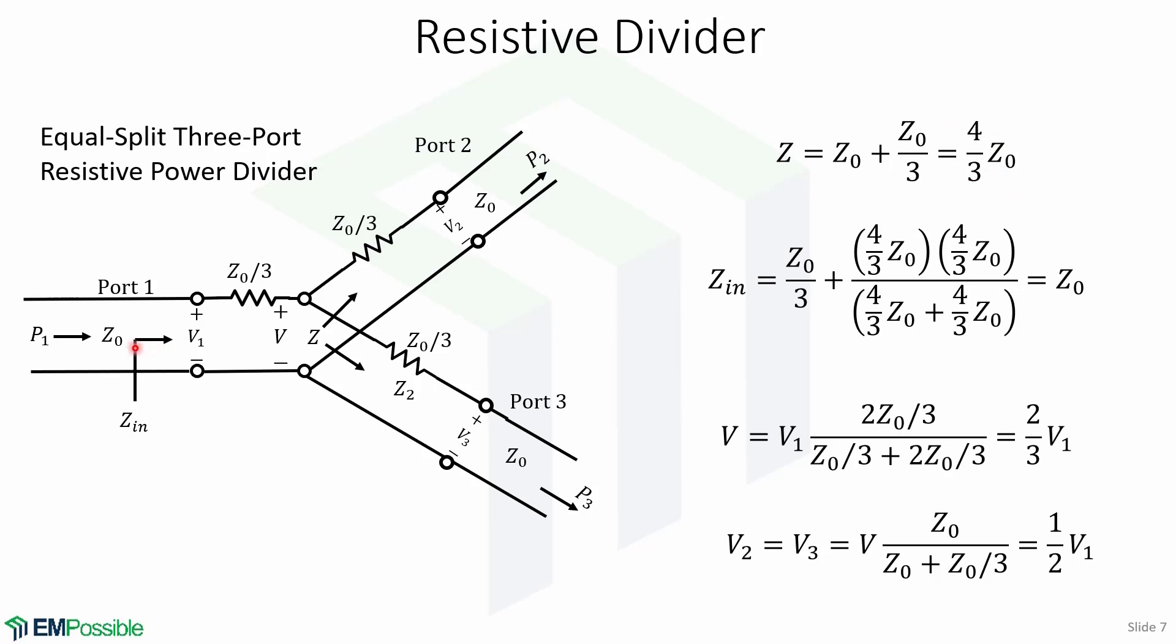So Z equals 4 thirds of Z0. The input impedance looking into port 1 is the series combination of Z0 over 3 and the parallel combination of Z, which is given by this expression, and it's equal to Z0. This means that the input is matched to the feed line.